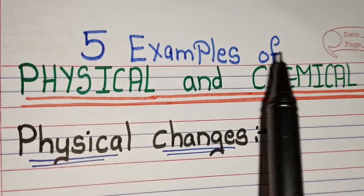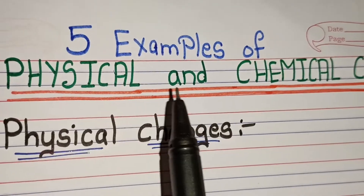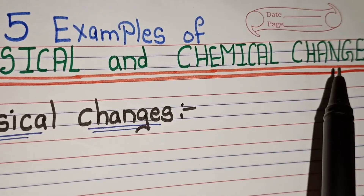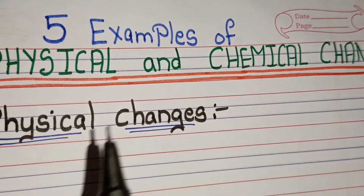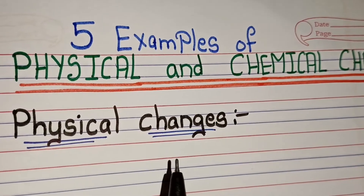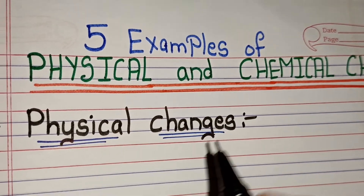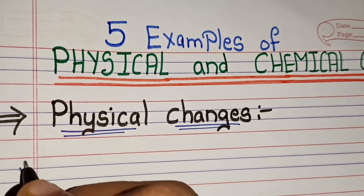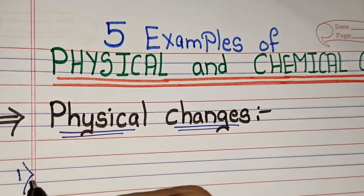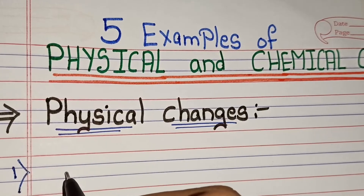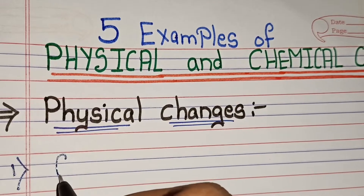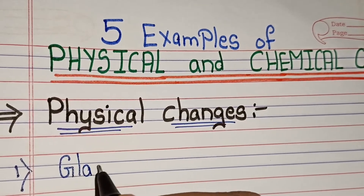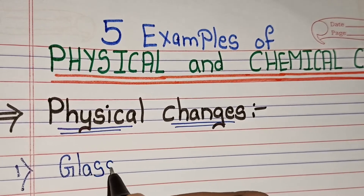Hello friends, welcome to Triyankush Learning Channel. Today's topic: five examples of physical and chemical changes. Physical changes — example first: glass breaking.